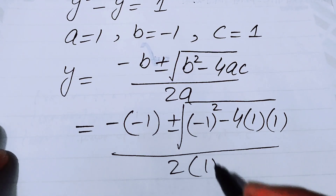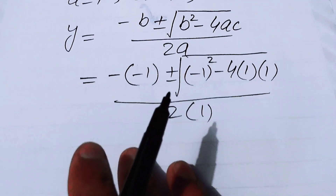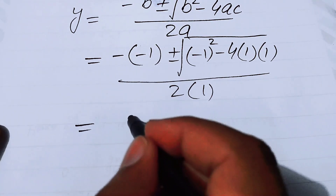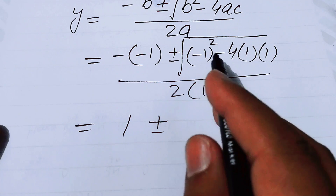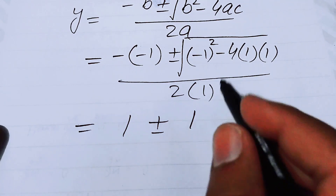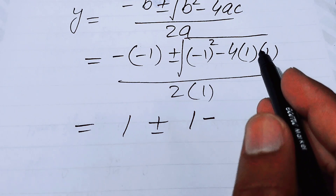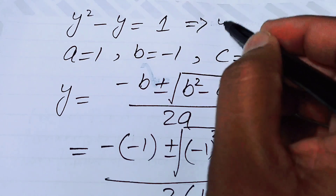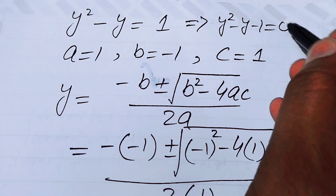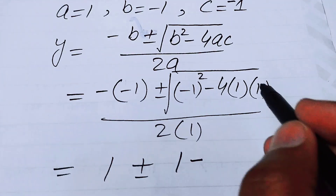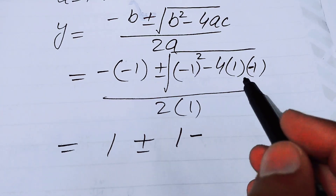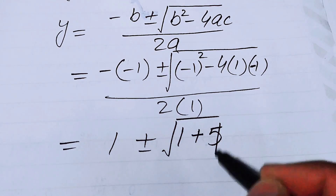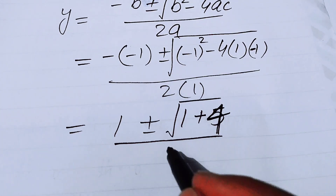Simplifying: −b gives plus 1, and b² − 4ac gives 1 + 4 equals 5, so we get (1 ± √5) over 2.